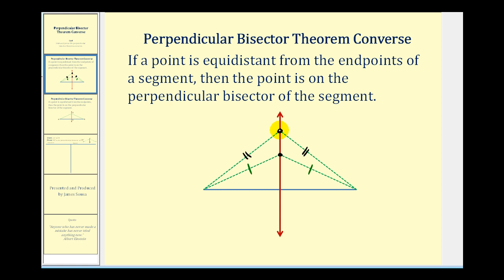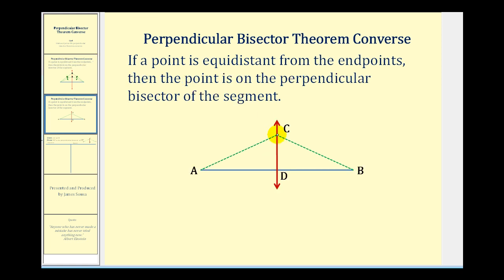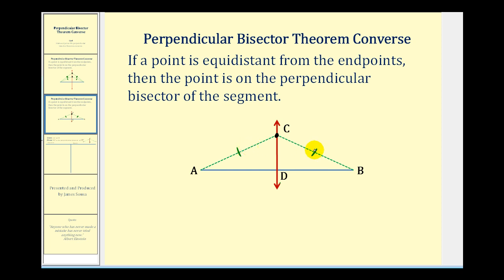Before we write our proof, let's talk about a strategy. If we consider point C, knowing that it's equidistant to the endpoints — that segment AC is congruent to segment BC — we want to prove this red line is the perpendicular bisector of segment AB. What we want to do is prove that triangle ACD is congruent to triangle BCD using side-angle-side congruence. If we consider this larger triangle, we know it would be an isosceles triangle because we have two congruent sides.